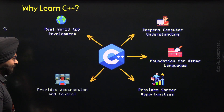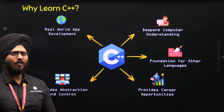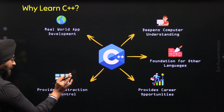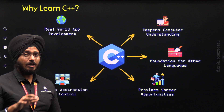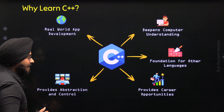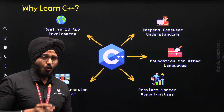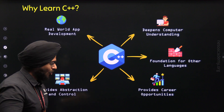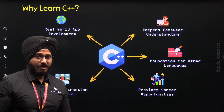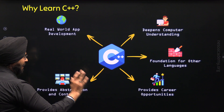The fifth reason is that C++ provides abstraction and control — the best of both worlds. By abstraction, I mean hiding implementation details from programmers. C++ is very good at hiding most implementation details from us, making it easier to write code. Not only this, it also provides control over system resources so that we can manipulate them for our own advantage.